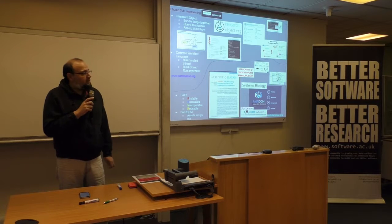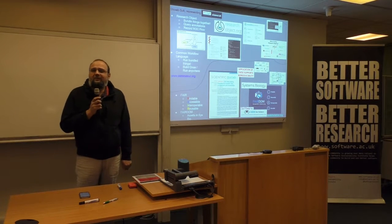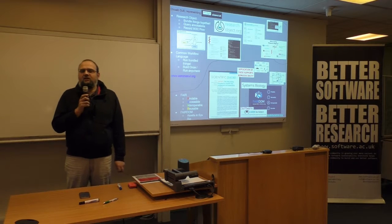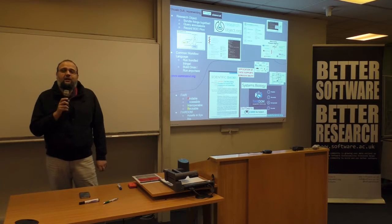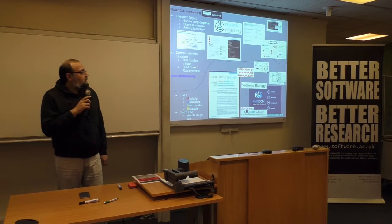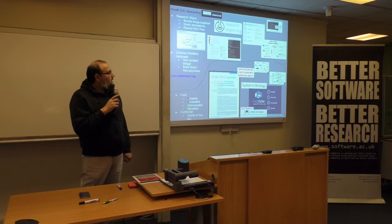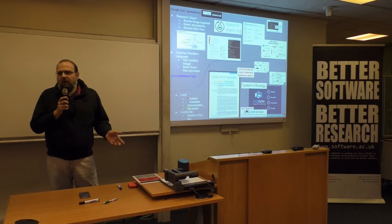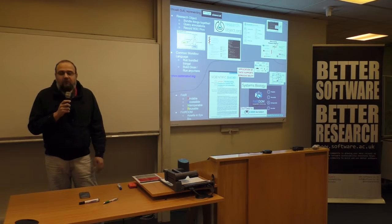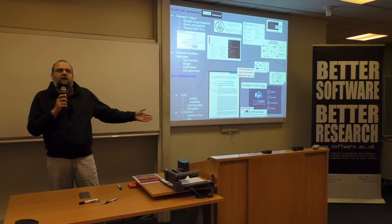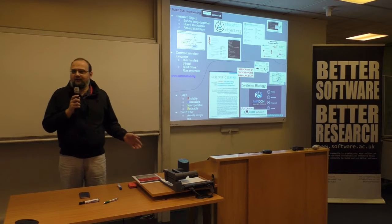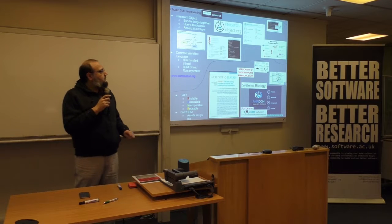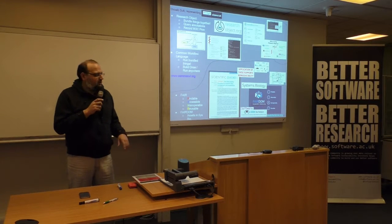Number one is research objects — people are interested in packaging things together. What research objects do is they help create a format for describing linkages between things. So you don't, for example, have just a zip archive; you have an archive which is a zip file and a manifest describing the relationships between the files — not necessarily executable, but a way of describing the relationship between things.